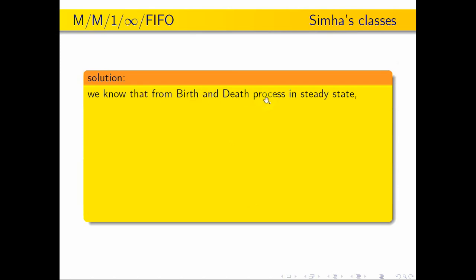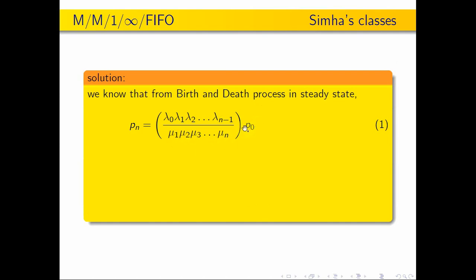We know that from the birth and death process in steady state, Pn is equal to lambda naught into lambda 1 into lambda 2, etc., lambda n minus 1, the whole thing divided by mu1 into mu2 into mu3, etc., mu n into P0. This is the birth and death process in steady state, which you learned in the previous video.